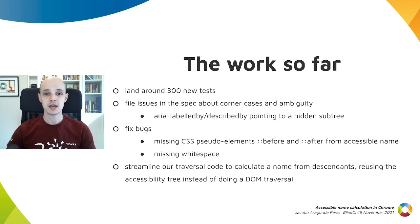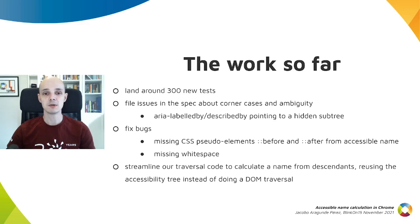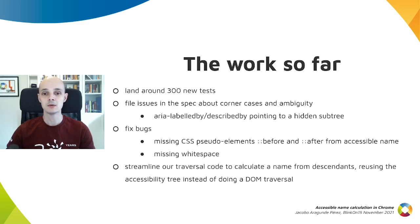This is what my colleagues and I have achieved so far in the last months. We landed around 300 new tests that helped detect corner cases and bugs in our implementation. We filed issues against the spec about things we found unclear. The most discussed one involved name calculation from a hidden subtree — authors can label things from a hidden node using aria-labelledby, but we found that every major browser was doing this slightly differently. The discussion is still ongoing.